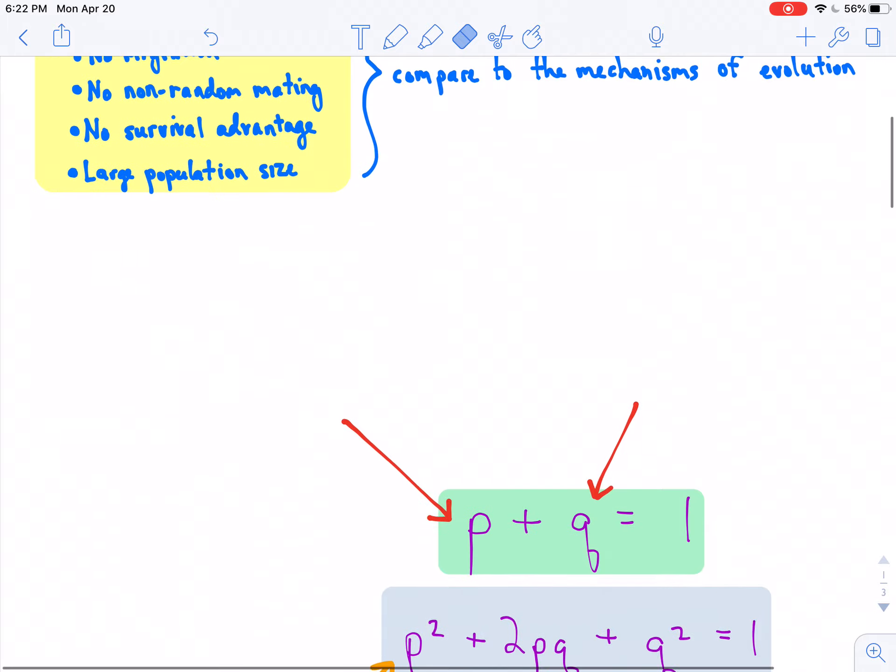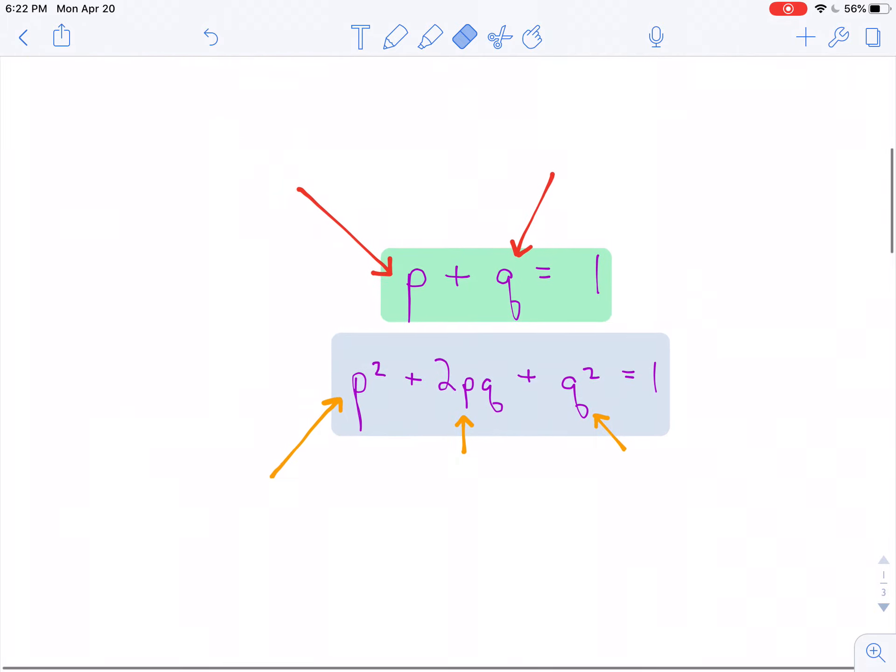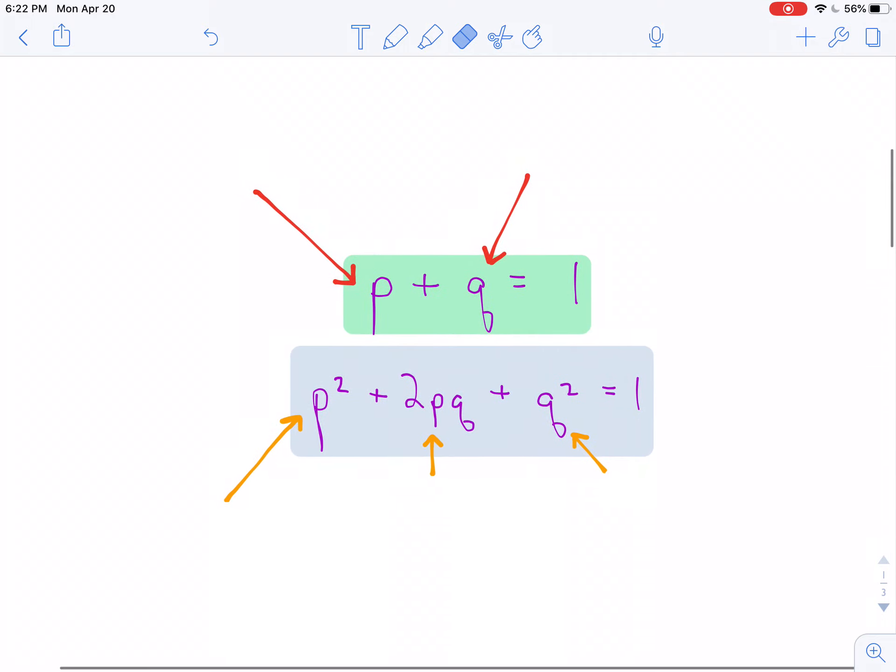As you can see, these criteria in order for a population to be in equilibrium really parallels closely those mechanisms of evolution that we've discussed previously. And here is the actual principle of Hardy-Weinberg equilibrium. There are two equations here, and these equations are going to allow us to algebraically and mathematically represent frequencies of alleles and genotypes such that we can follow them through a population over time. The first equation is p plus q equals 1, where p represents the frequency of the dominant allele. Frequency is just a fancy word for the decimal form of a percentage. If the percentage is 25%, the frequency would be 0.25.